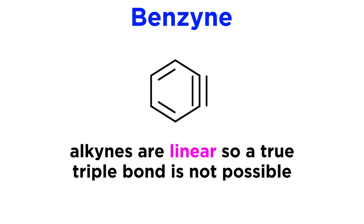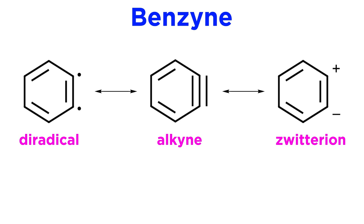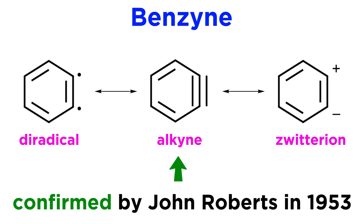Because alkynes are linear species, a true triple bond is unable to form, given the torsional strain that would be generated by the benzene ring. So the intermediate could also be represented by a zwitterion, or a diradical, but some triple bond character is still present, and we will typically represent the intermediate that way.